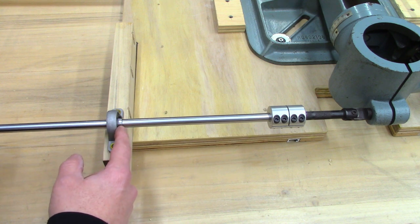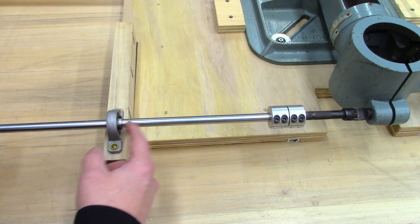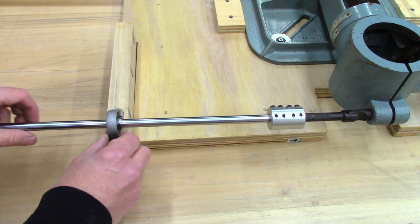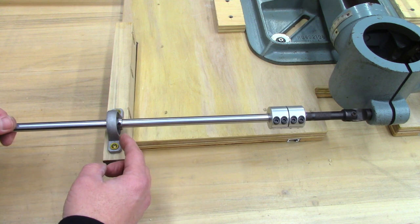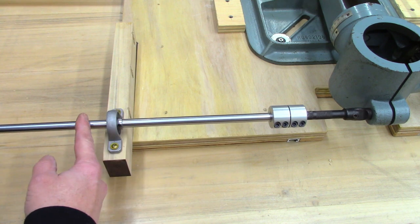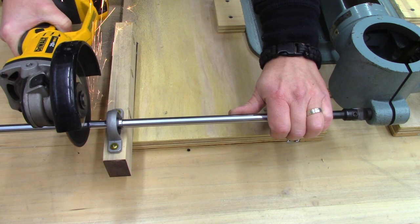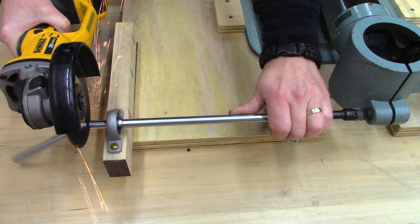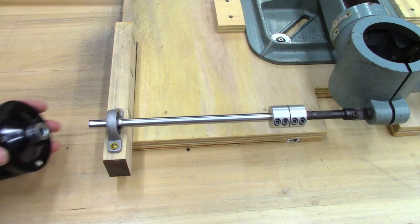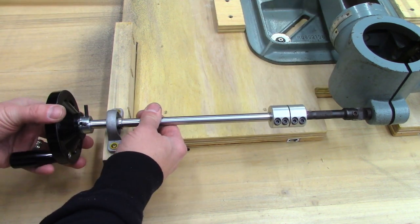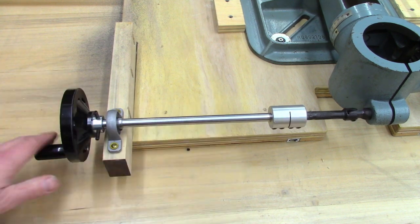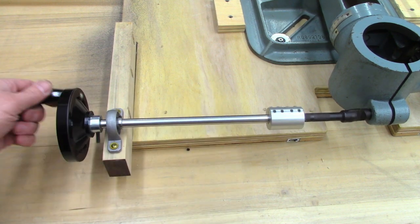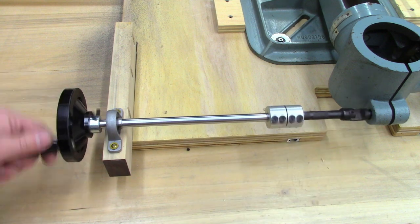I'm not going to tighten up the set screws on this pillow block bearing because as I loosen this up, the shaft's going to need to slide through the inner race a little bit. So I'm just going to leave it loose. I just need to trim this off a little bit. Now I have this handle on the side. Then I can loosen this screw up.